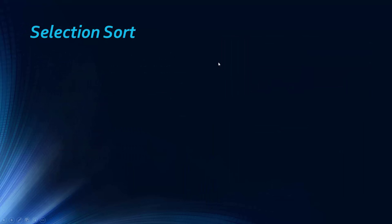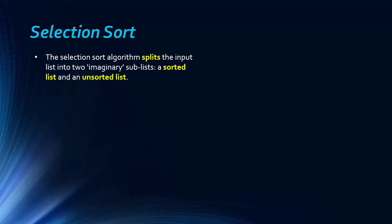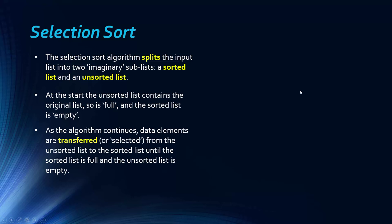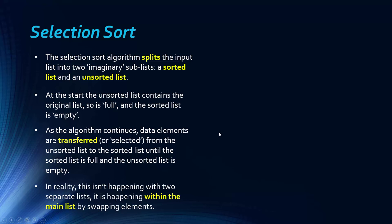So the final one in this video is selection sort. And what it does, really, at least the way I visualized it when I first learned it, is there's two separate lists, a sorted list and an unsorted list. Really, it's not because it's imaginary, because it's actually done within the same list, but that's just how I always envisioned it. So at the start, the unsorted list is just the original list, so it's full, nothing's happened yet, and the sorted list is empty because the algorithm hasn't started sorting it yet. As it starts and continues, the elements are transferred from the unsorted list to the sorted list until it's full and the unsorted list is empty. Like I say, in reality, this isn't really happening because it's within the same main list, just by swapping the order.